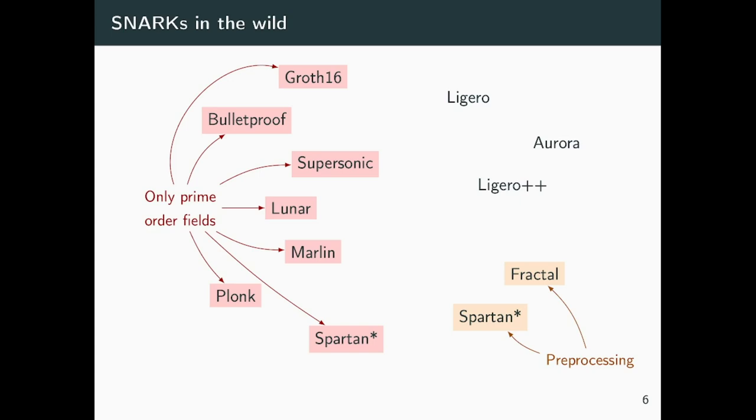Furthermore, we are not yet able to capture in our reduction pre-processing SNARKs, which include Fractal and Spartan. But we are able to capture the remaining systems that are Ligero, Aurora and Ligero++, that are transparent, meaning that there is no trusted setup, and believed to be post-quantum.